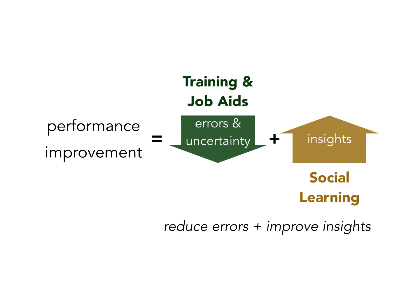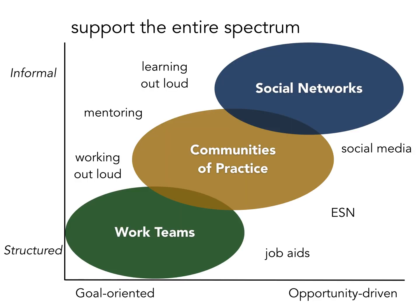Organizational performance improvement is a combination of reducing errors and increasing insights. Training and performance support, like job aids, help to reduce errors. But social learning is necessary to improve insights. While most organizations have good training programs, there is a huge opportunity in every organization to improve social learning. The Workplace Learning Workshop provides an opportunity to look at nine methods that can improve education, exposure, and experience in any workplace.